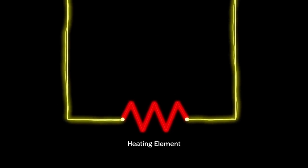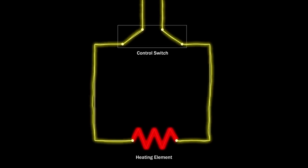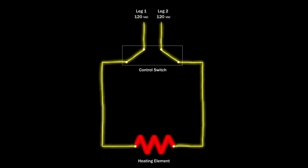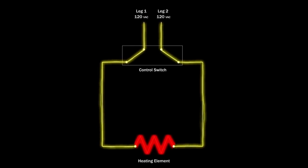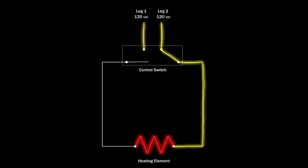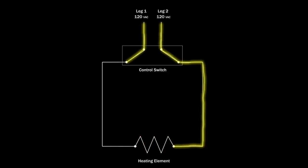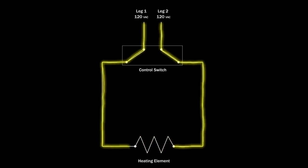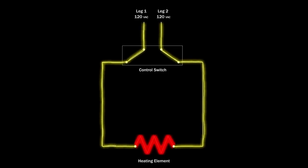The switch regulates the heating element. When the element reaches the designated temperature, the switch shuts off the voltage. This cycle repeats throughout the cooking process to maintain the proper temperature.